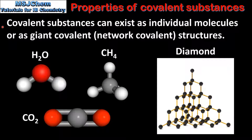Covalent substances can exist as individual molecules or as giant covalent or network covalent structures. On the left we can see examples of molecular compounds. They are H2O, CH4 and CO2.